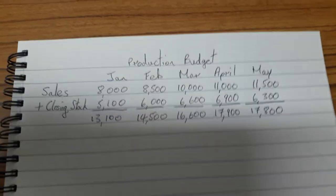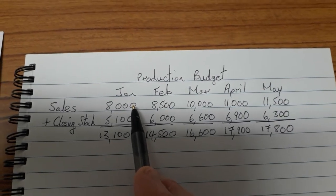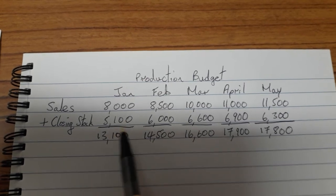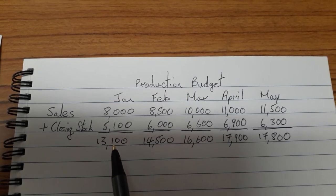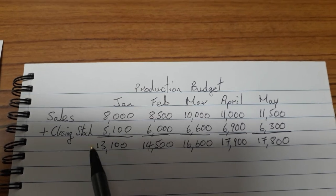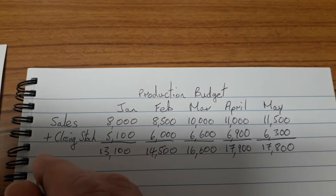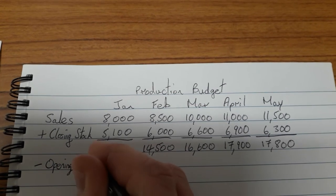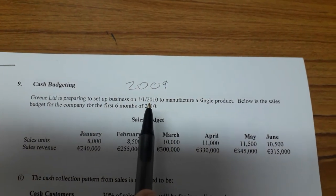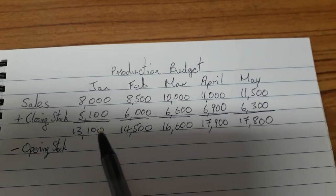Now we're ready for the next part. If in January we want to sell 8,000 units and have 5,100 left over at the end of the month, we need to produce 13,100. However, if we already have some stock in our warehouse at the start of the month then we don't have to manufacture as many as 13,100 — so we're going to subtract the opening stock, any units we have in our warehouse at the start of the month.